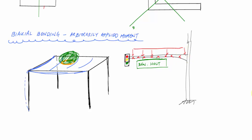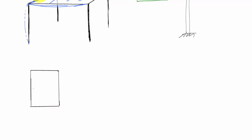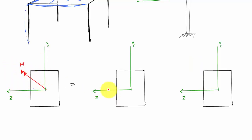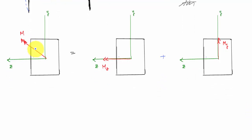For a rectangular cross section with a coordinate system where y points upward from the centroid and z goes horizontally, both aligned with principal axes, a moment M applied at an arbitrary angle theta is no longer just about the z-axis. By superposition, we break the moment into its components: M_z equals M cos(theta) and M_y equals M sin(theta), where theta is measured from z toward y.